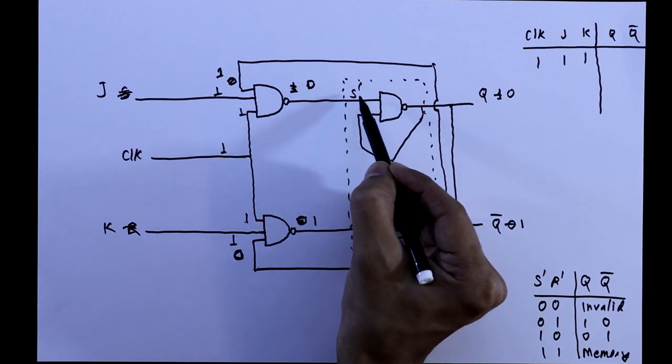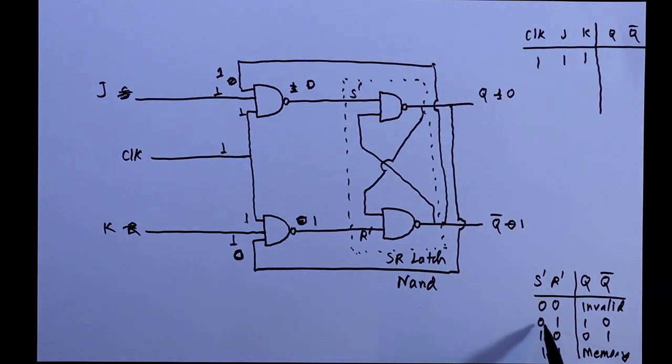Now this time S is 0 and R is 1. S is 0 and R is 1. We will get Q as 1 and Q bar will be 0.